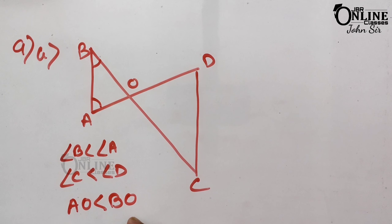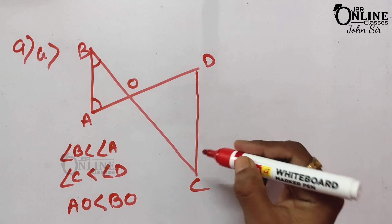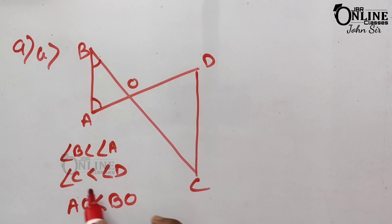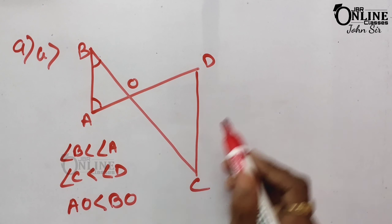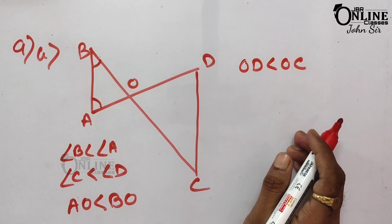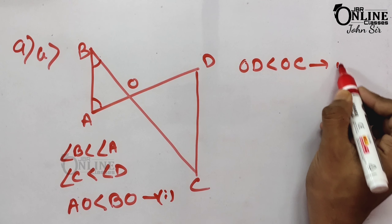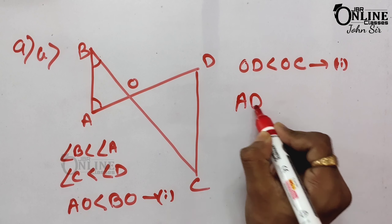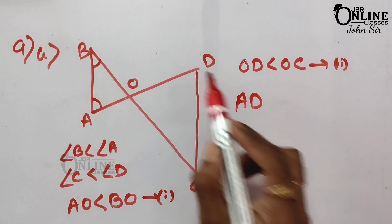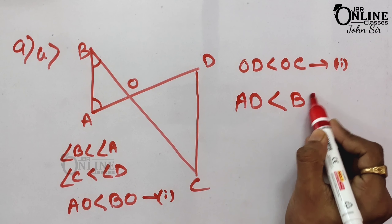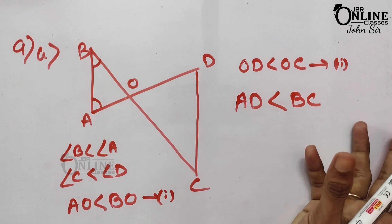Similarly, in triangle COD, since angle C < angle D, we get OD < OC. Adding the two inequalities: AO + OD < BO + OC, which gives AD < BC. Hence AD < BC is proved.